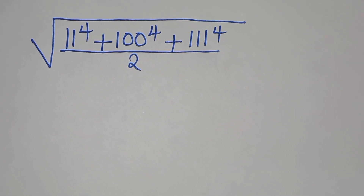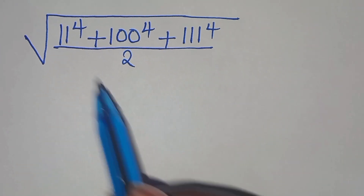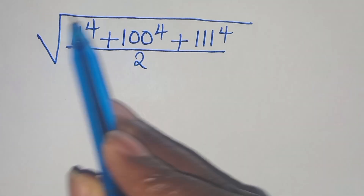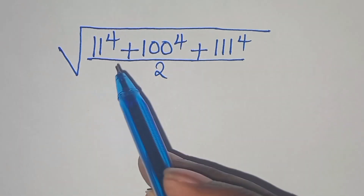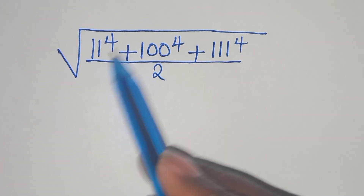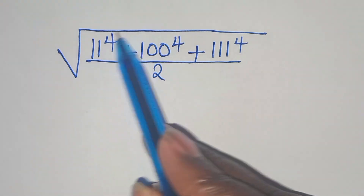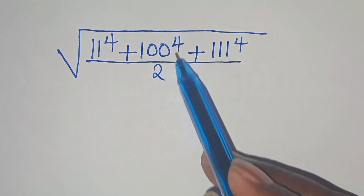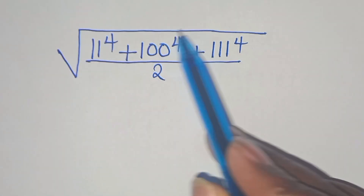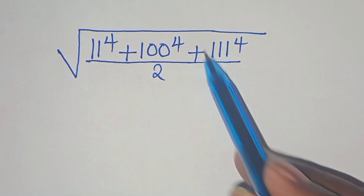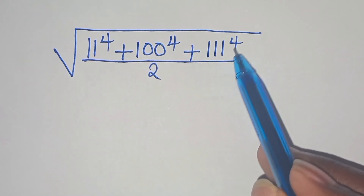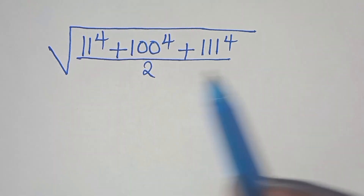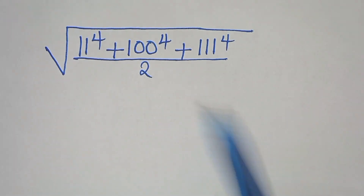Hello everyone, you are welcome to solve this nice square root math problem, which is the square root of 11 to the power of 4 plus 100 to the power of 4, then plus 111 to the power of 4, divided by 2.